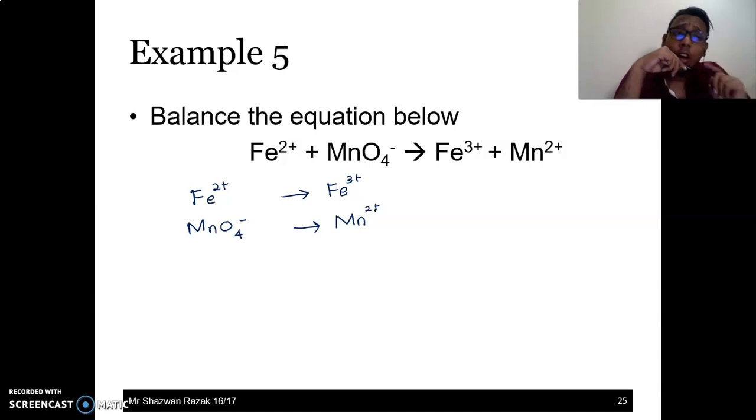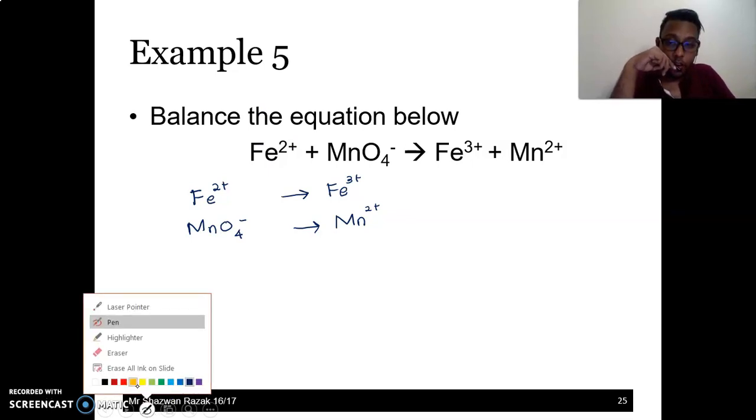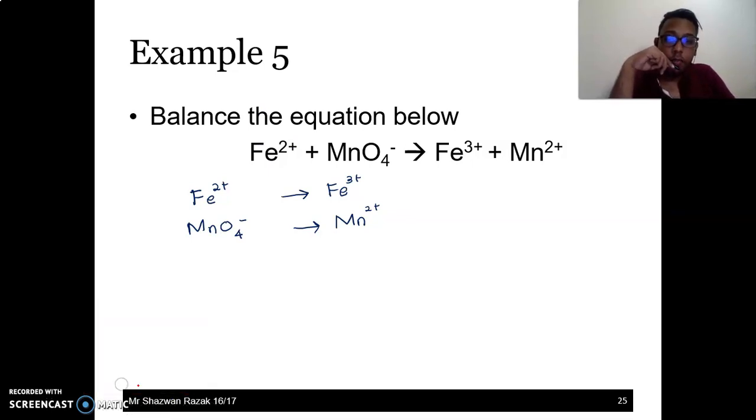How to balance that? We look at one by one. The steps are like this. If you want to balance this, you remember MOHAIR. What is MOHAIR? M, followed by O, followed by H, followed by E. M stands for metal. Then we look at our oxygen, we look at hydrogen, and finally we look at the electrons or charge.